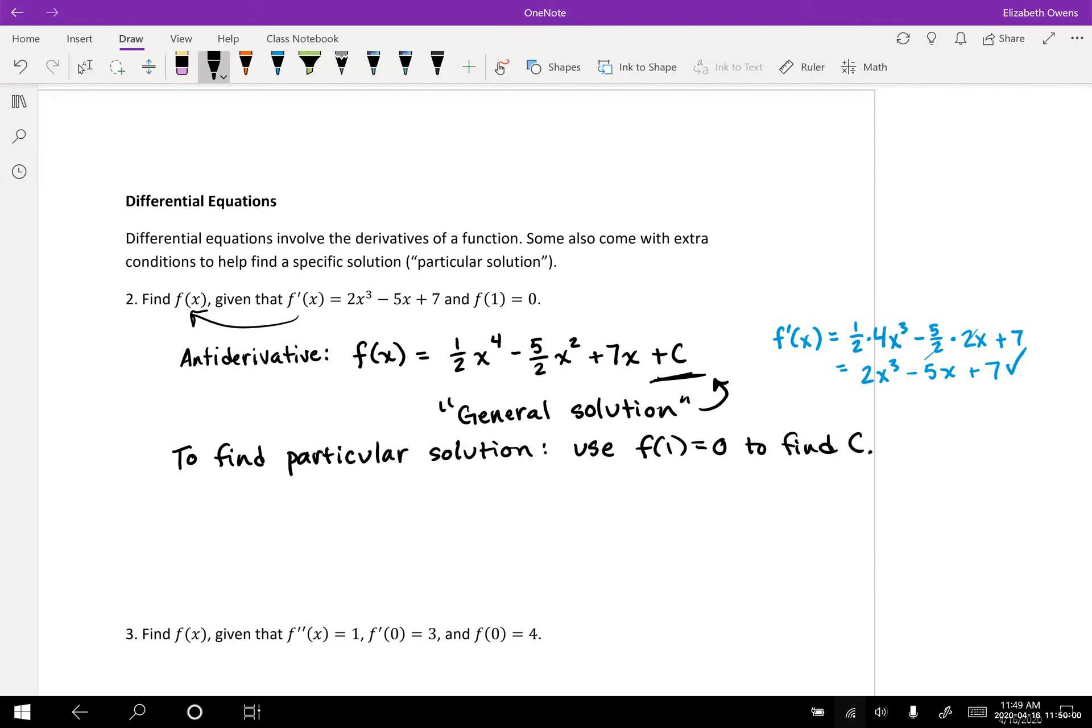Okay. Okay, so f of one. Plugging one into this function here would be one half one to the fourth minus five halves one squared plus seven times one plus c. Okay, and so there we would get one half minus five halves. And that would be negative four halves, that's negative two. Okay, plus seven would be five plus c. Okay. And so that is going to equal zero. Okay, so set f of one equal to zero. Five plus c equals zero.